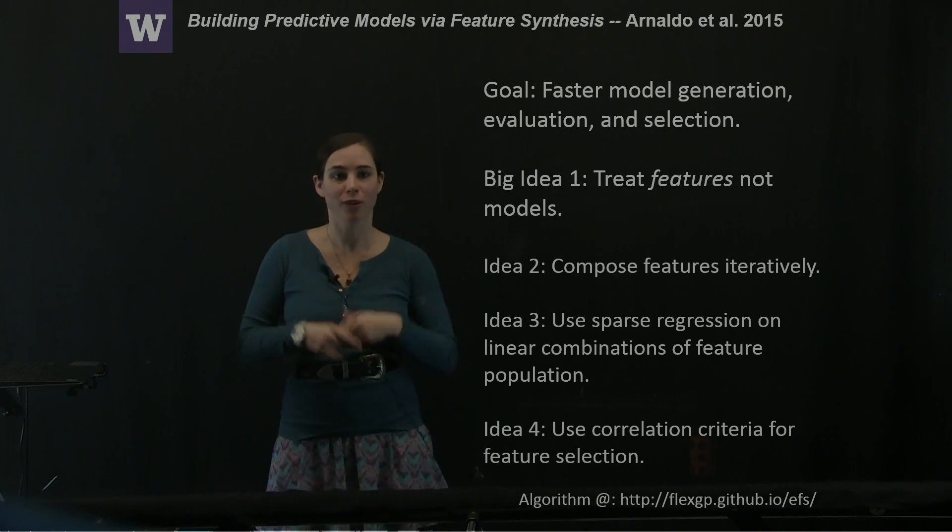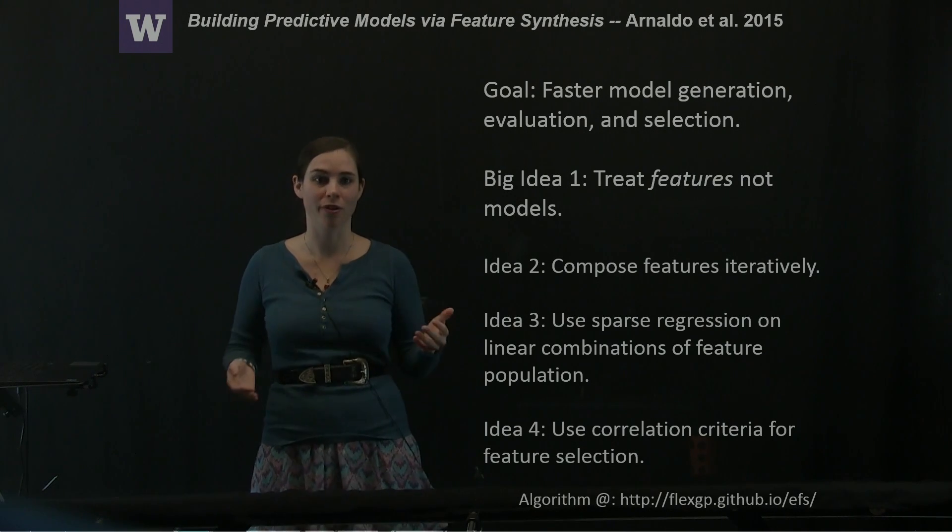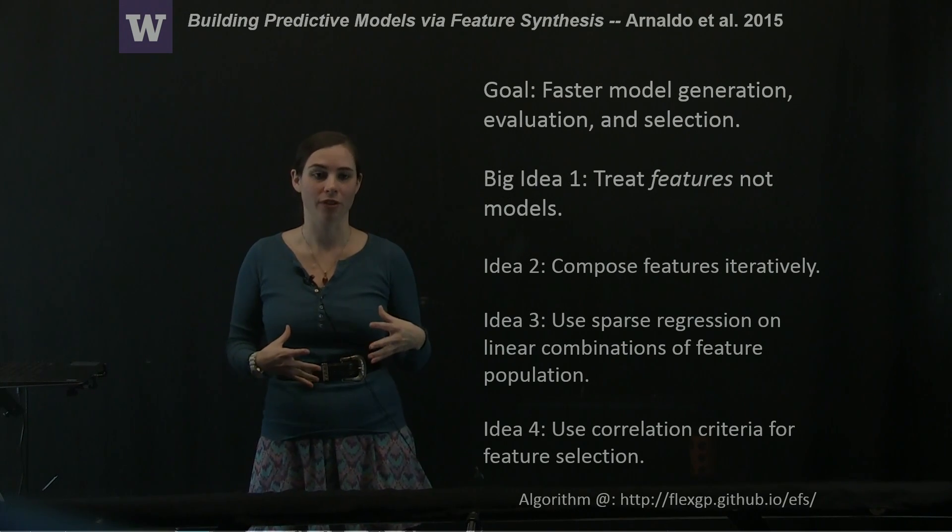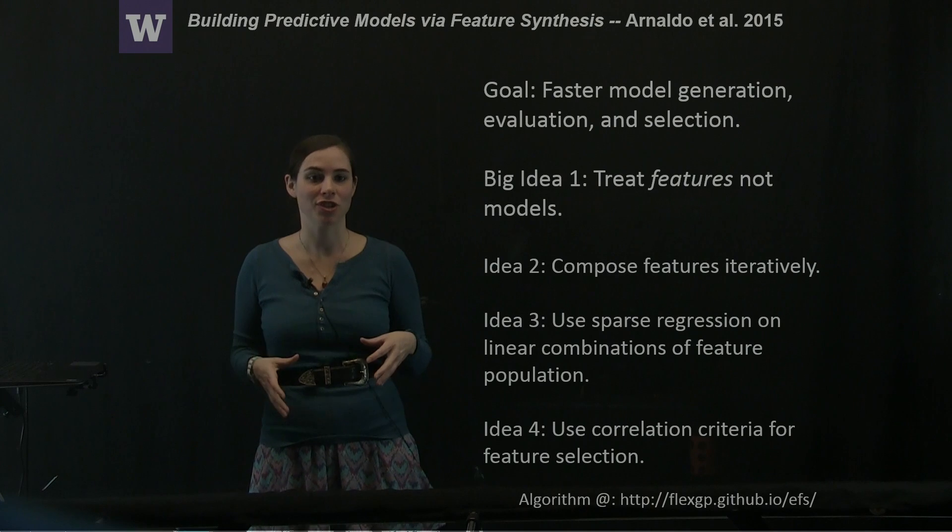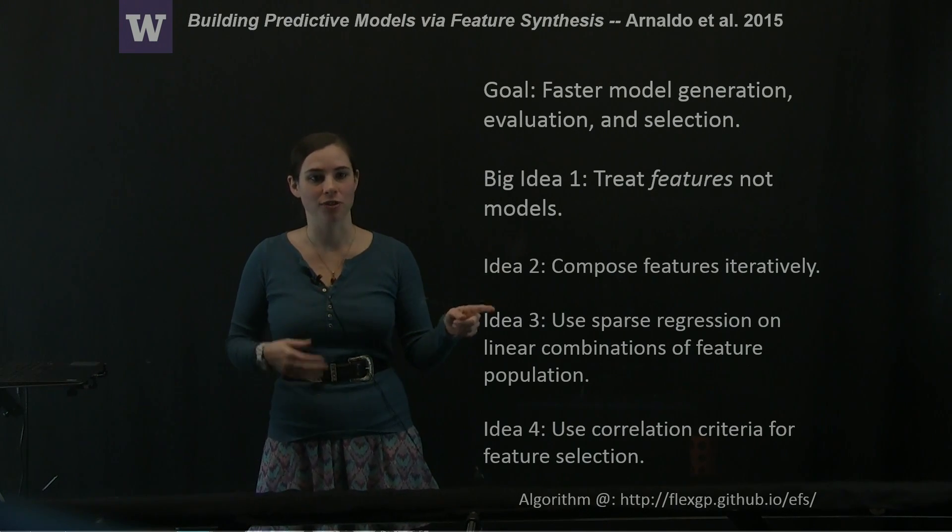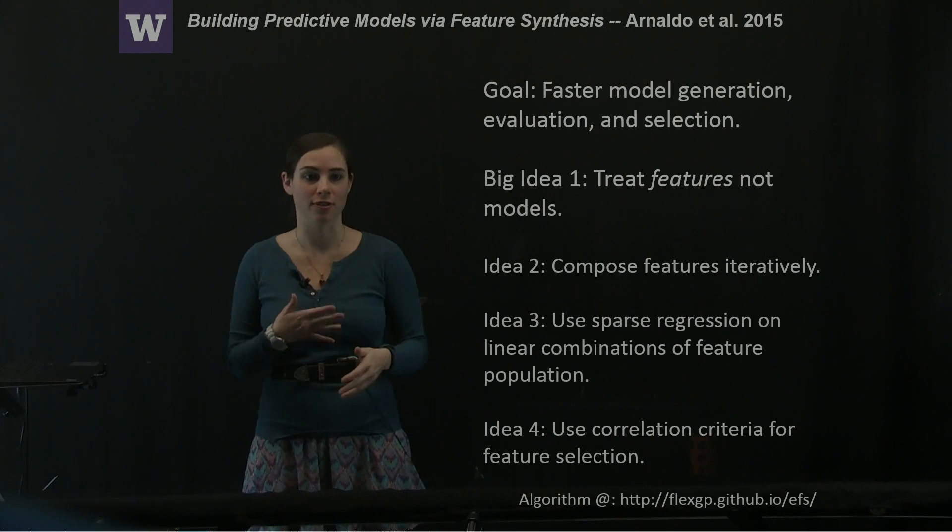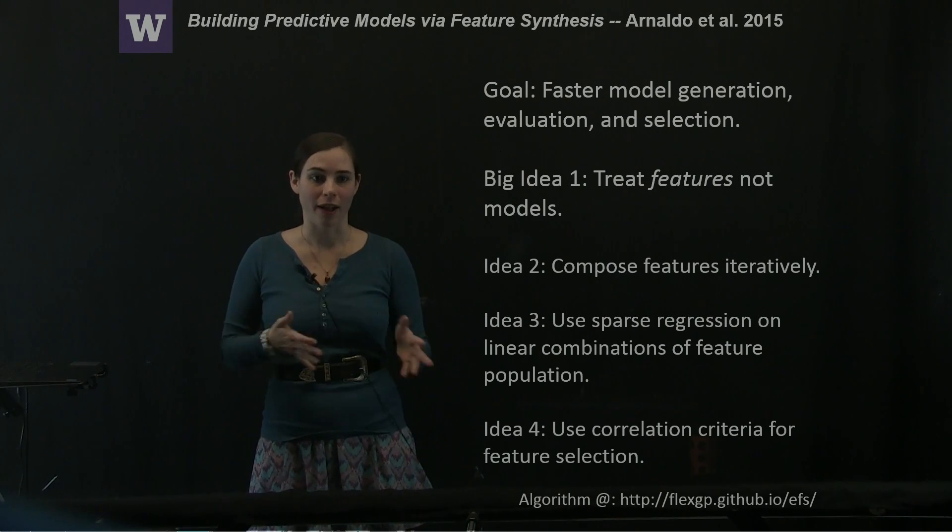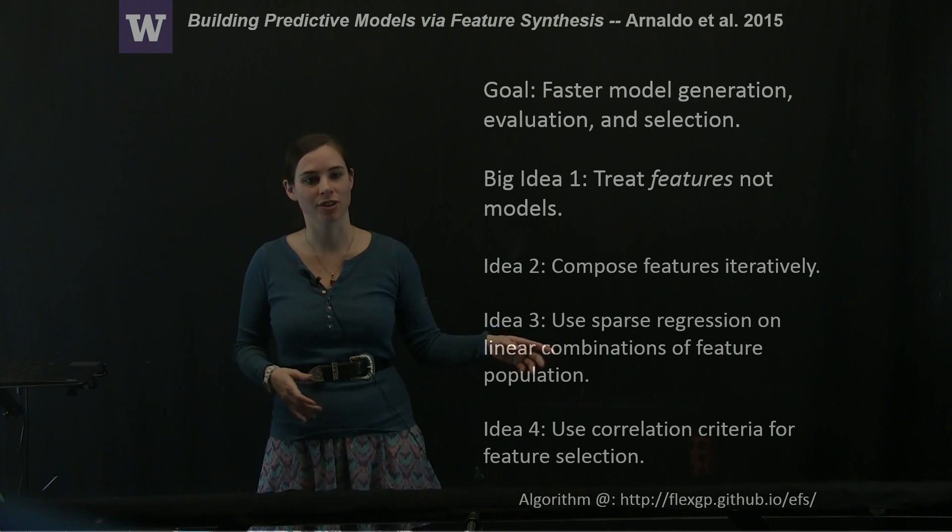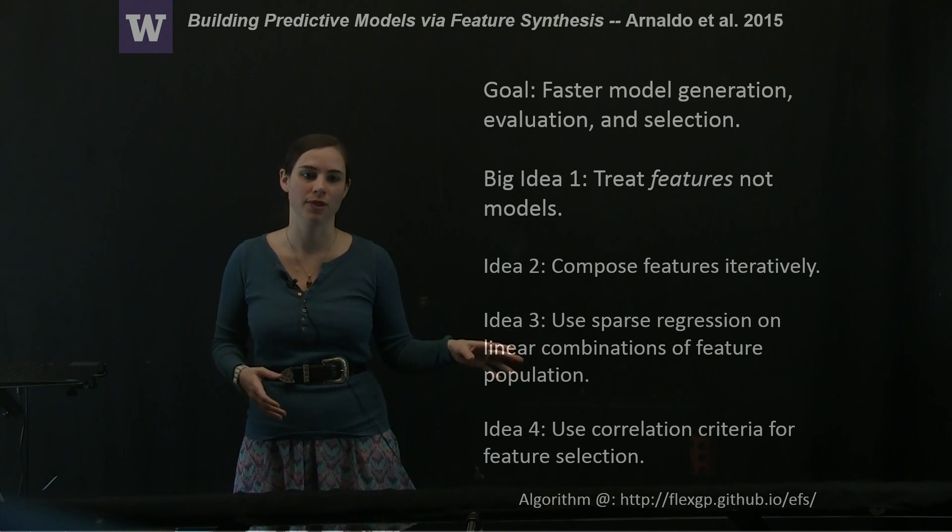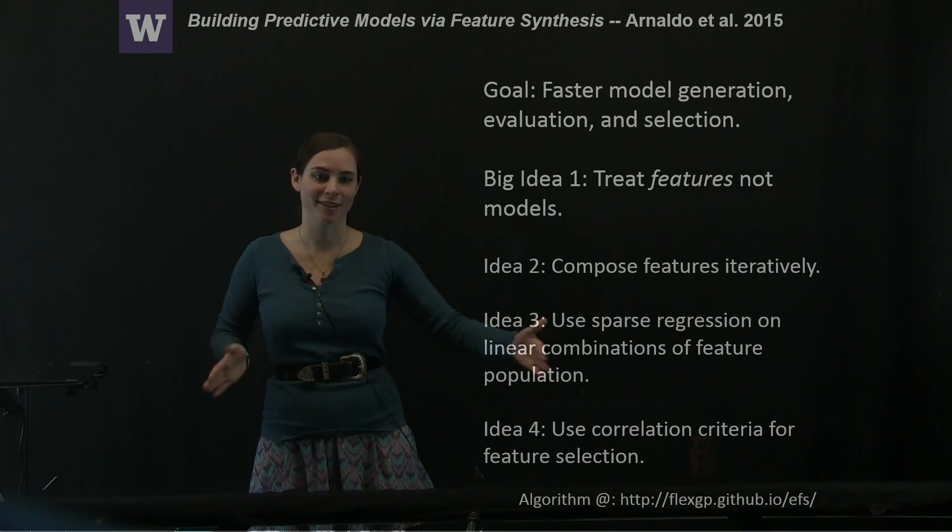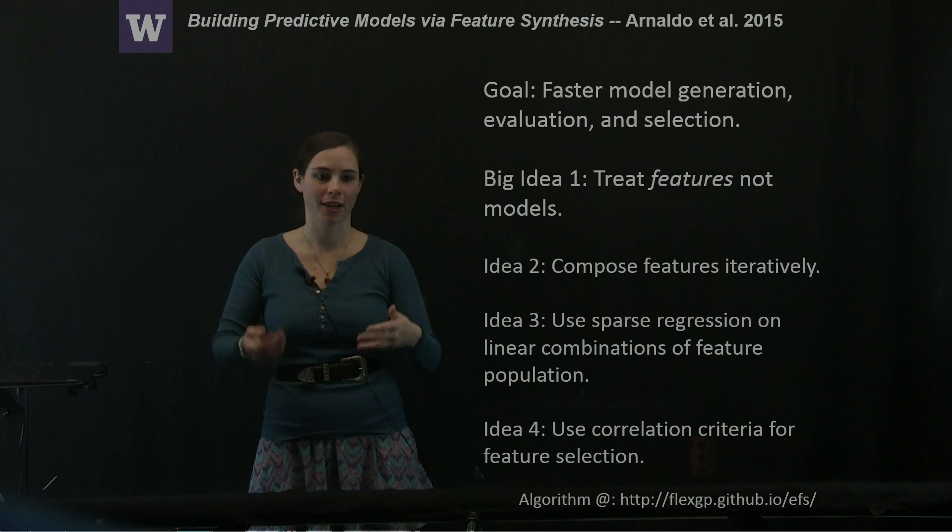In order to achieve their goal of faster model generation, evaluation and selection, the big idea that the authors had was to treat the features not the models. They compose these features iteratively in a method inspired by genetic algorithms and use sparse regression on the linear combination of those features and then a correlation criteria to select which features to keep for the next generation.